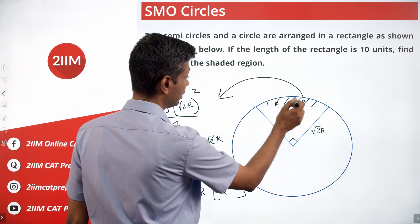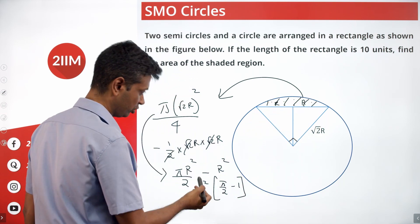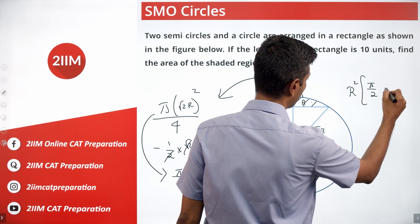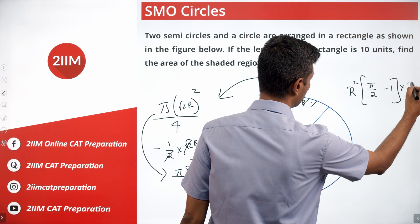This area of this segment, the answer we are looking for is this one: R square into pi by 2 minus 1 whole thing into 2.